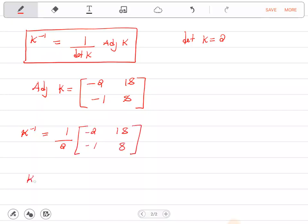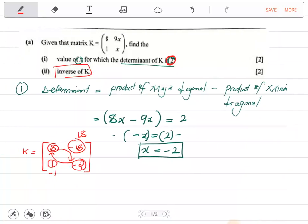So our K-inverse is equal to half times negative 2, get negative 1. Half times 18, we get 9. Half times negative 1, we get negative 1 over 2. And half times 8, we get 4. So this one is our adjoint. So we've seen how easier it is, right?